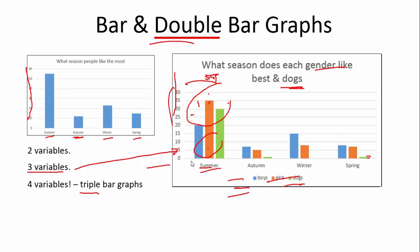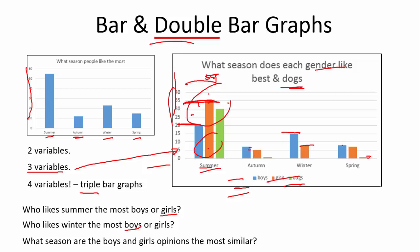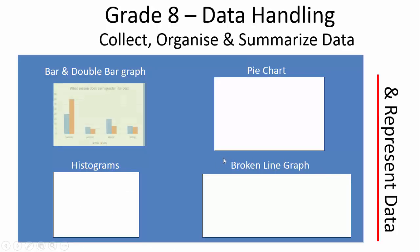Now, what questions could we ask here? Who likes summer the most - the boys or the girls? We know the girls are the orange, and the girls clearly like summer more than the boys. Then we can ask: who likes winter more, boys or girls? The boys are much higher than the girls for winter, so we can say the boys. Then we can ask: what season are the boys' and girls' opinions most similar? Autumn and spring both look pretty close. If we were getting numbers we could work it out, but I'm going to say spring for this example. So that's our bar and double bar graphs - this is how we represent data.